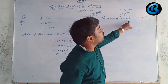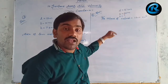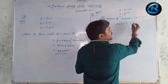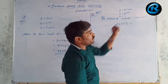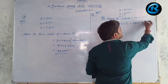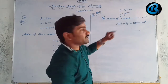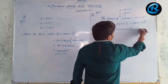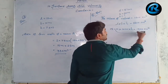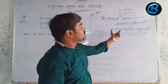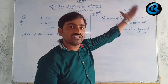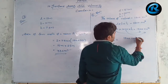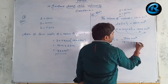Volume formula for cuboid = l × b × h = 1200 cm³. Substituting: 15 cm × 10 cm × h = 1200 cm³. Transferring 15 and 10 to the right-hand side gives h = 1200 ÷ (15 × 10).